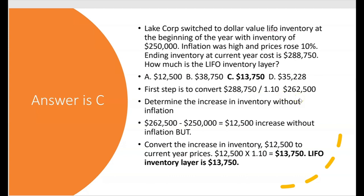We expect $262,500 to be lower than $288,750 since we're factoring out inflation. Next, compare $262,500 to beginning inventory of $250,000 — both at base year — giving a $12,500 increase without inflation. Finally, convert that $12,500 increase to current year prices: $12,500 × 1.1 = $13,750, which is the LIFO inventory layer — answer choice C.